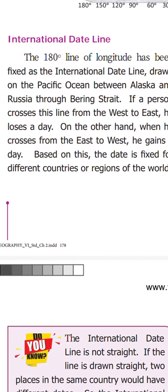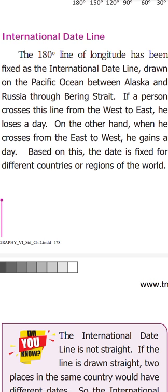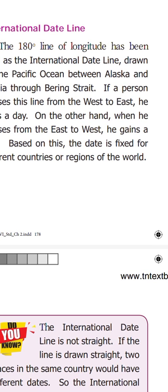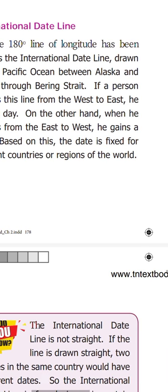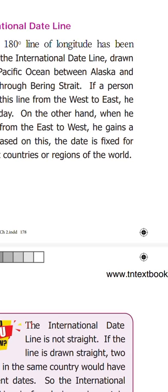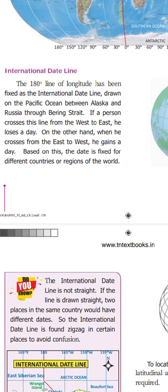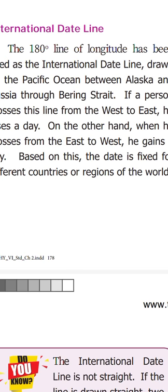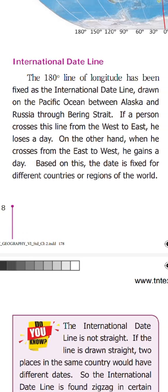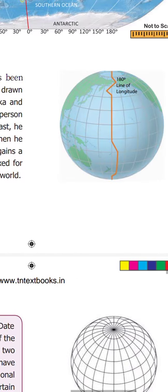If you move from west to east across the international date line, you lose a day — minus one day. On the other hand, when you cross from east to west, you gain a day. For example, if it is Friday when you are moving from east to west, the next day will be Saturday for you. Based on this, the date is fixed for different countries and regions of the world. Key words: Alaska, Russia, Bering Strait, 180-degree international date line.